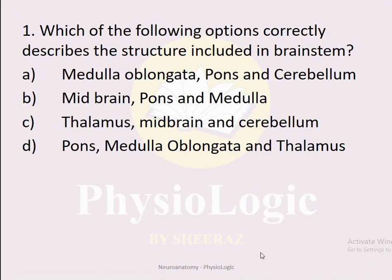MCQ number one: Which of the following options correctly describes the structures included in the brainstem? Option A: medulla oblongata, pons, and cerebellum. Option B: midbrain, pons, and medulla. Option C: thalamus, midbrain, and cerebellum. Option D: pons, medulla oblongata, and thalamus.